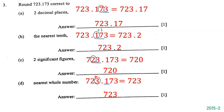Now we want to write 7723.173 correct to the nearest whole number. We circle 3 in the ones place and underline 1 to its right. Since 1 is less than 5, we do not round up — 3 stays the same. We drop the decimal part and everything to the right. The answer is 7723.